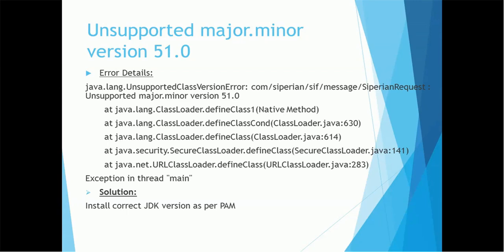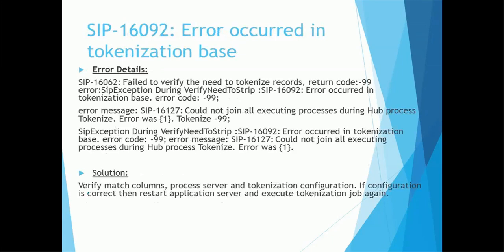Recently systems have been migrated and companies are well aware of Java security policies, so most systems are up to date. For example, MDM 10.2 supports JDK 1.8, which is a more stable version. If your system is older and using JDK 1.6 or 1.5, you may get the same error. Use the PAM document to check the correct JDK version for your MDM version and install it — that is the fix.